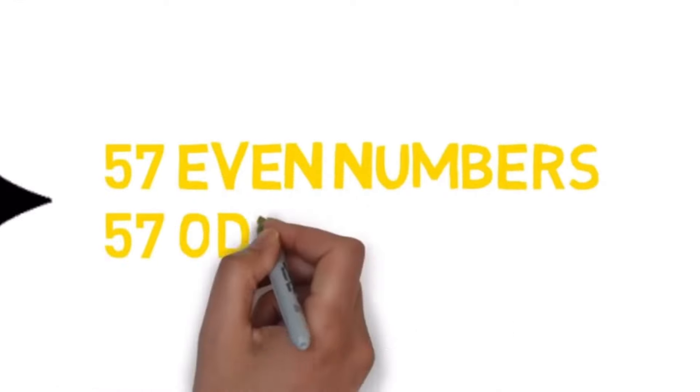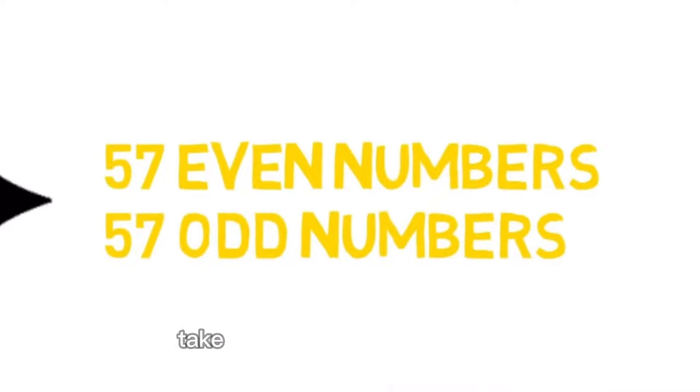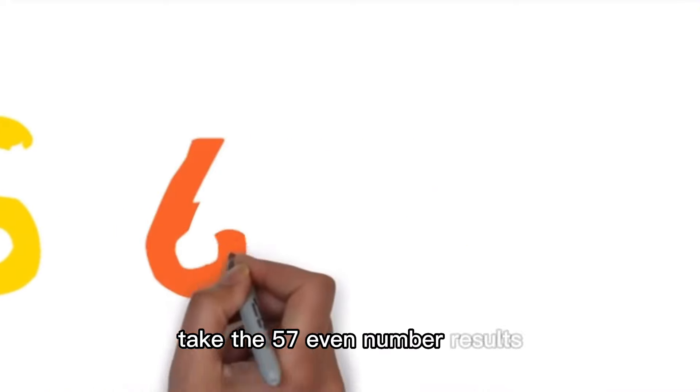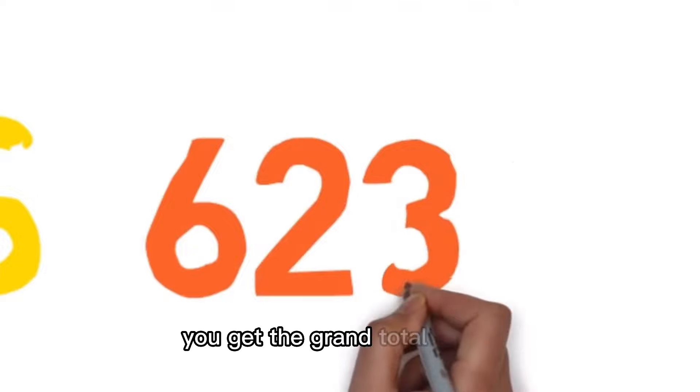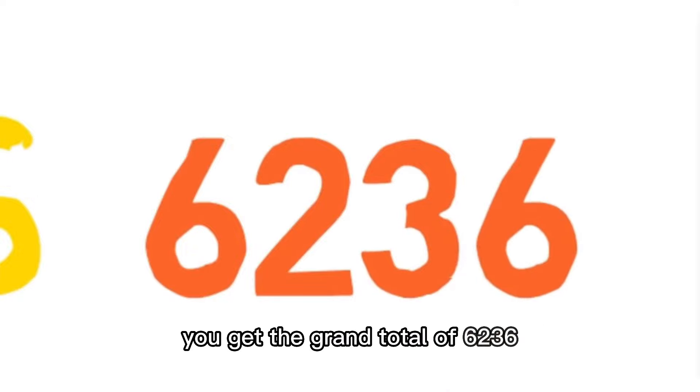What created this fine balance? Now let's go deeper. Take the 57 even number results and add them all together. You get the grand total of 6,236.